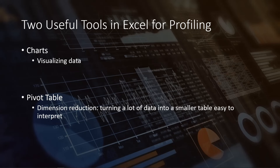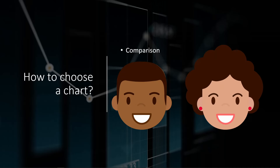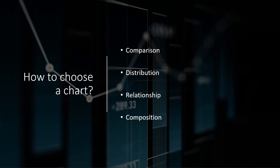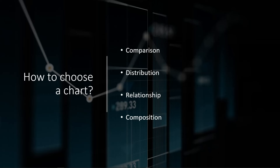Charts can be used for different purposes, and there are many different types of charts in Excel. The question sometimes boils down to how do you choose a chart. Here are four different purposes for creating a chart. We may create a chart for comparison — for example, men versus women, or high income versus low income. The second is for distribution. For example, using a histogram to summarize the grades of a class — that's distribution. And third is relationship — how are two different customer metrics related to each other?